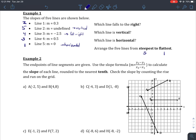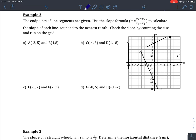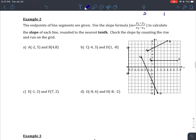Example 2: The endpoints of line segments are given. Use the slope formula m = (y2-y1)/(x2-x1) to calculate the slope of each line, rounded to the nearest tenth. Check the slope by counting the rise and run on the grid. We're only going to do one of these because you have a built-in double check - you can count the rise and run for yourself.